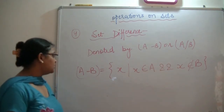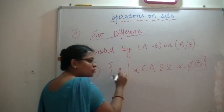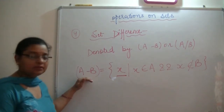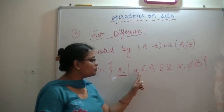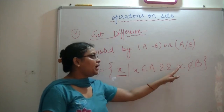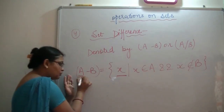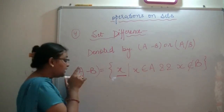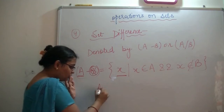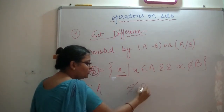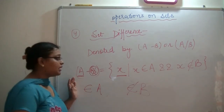Let's understand the definition. A-B is equal to the set of X, where X belongs to A and X does not belong to B. That is, the elements that belong to set A but do not belong to set B.